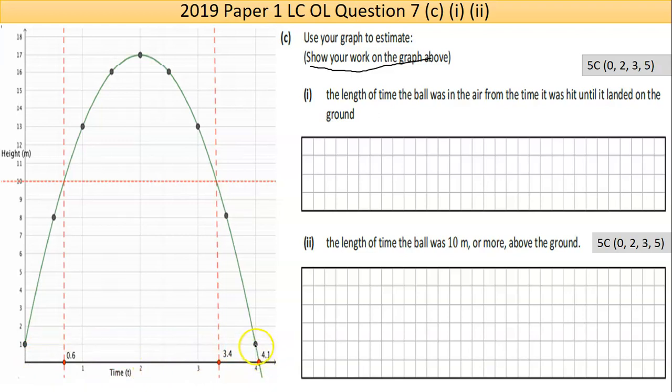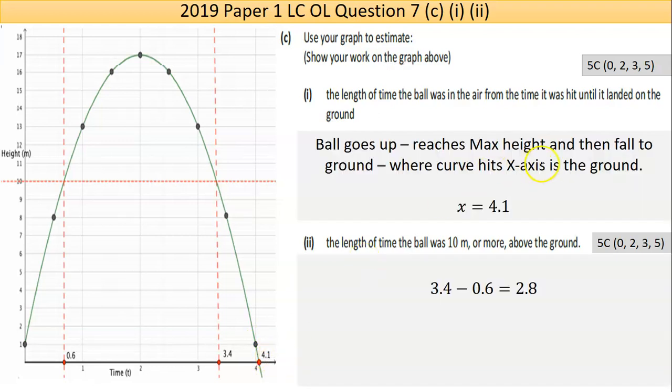I'm estimating that from the graph there as being 4.1. Your graph, whatever your graph says, whatever your graph hit the x-axis, that's the length of time the ball was in the air.